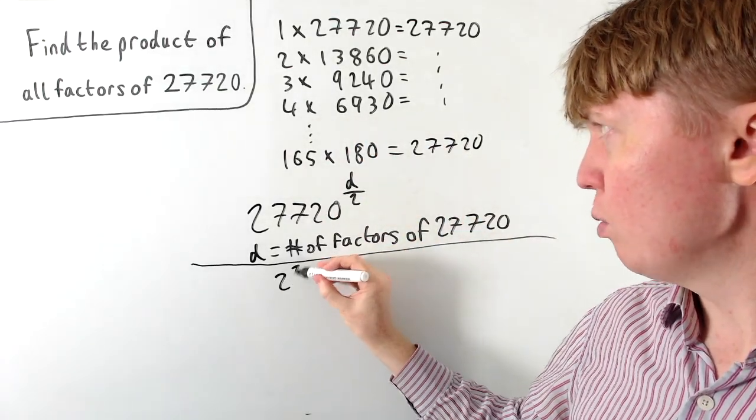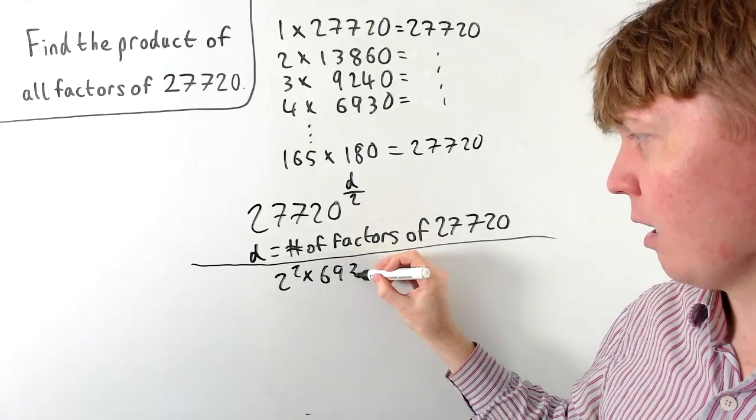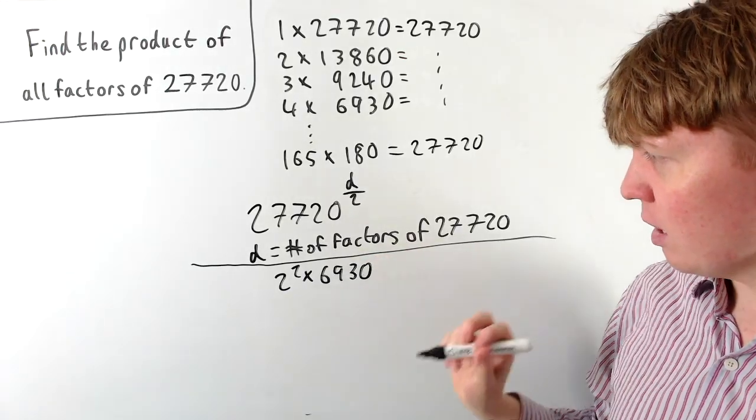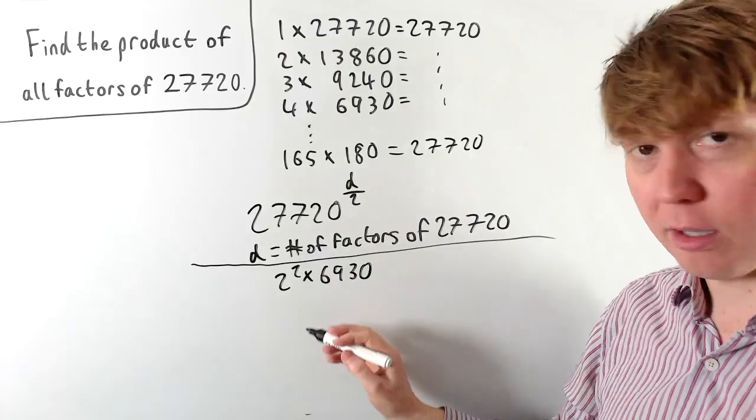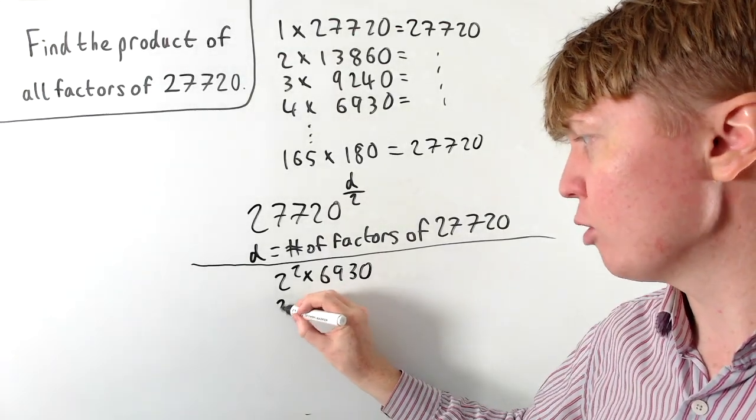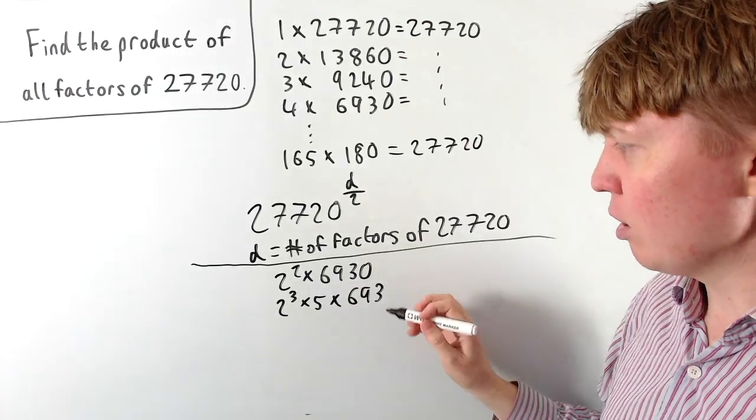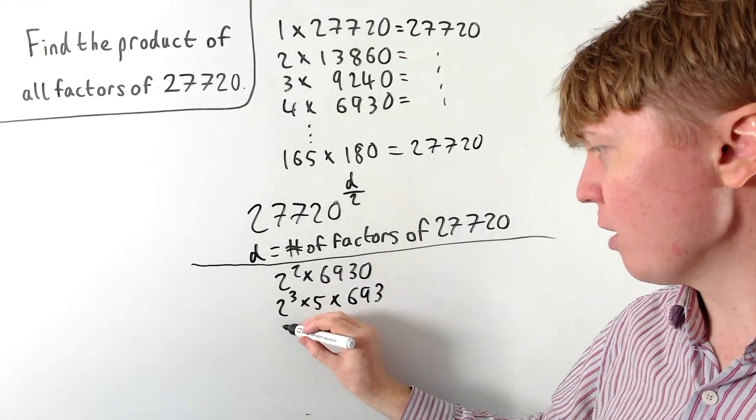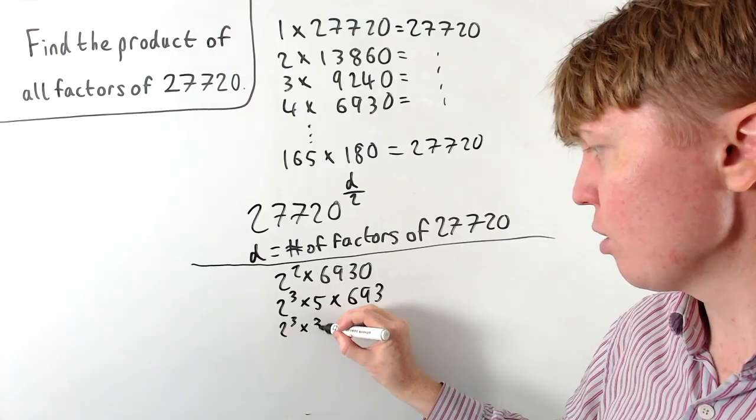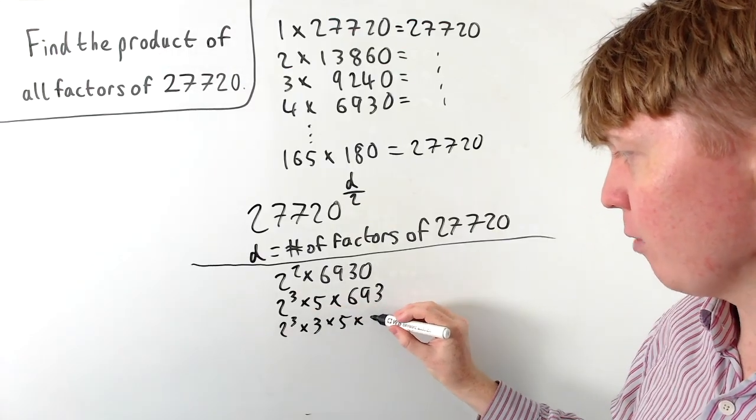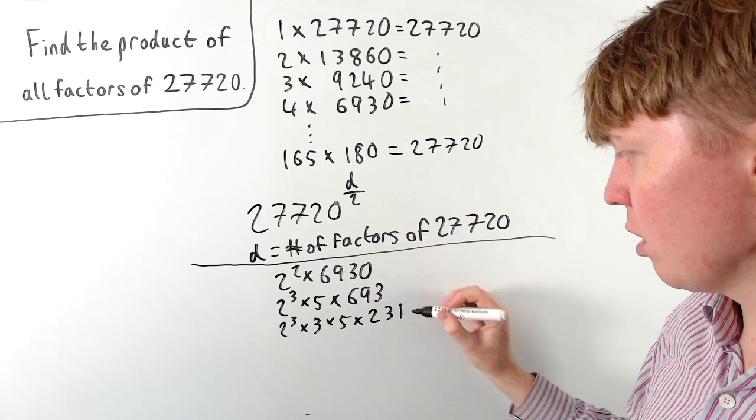So we could write it as 2 squared times 6,930. And you can see this is a multiple of 10. So we could take out another factor of 2 and another 5 to write this as 2 cubed times 5 times 693. Now you can see this is divisible by 3. So we've got 2 cubed times 3 times 5 times 231.